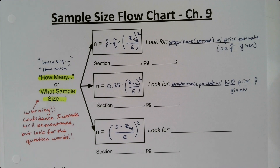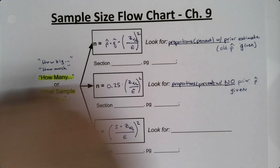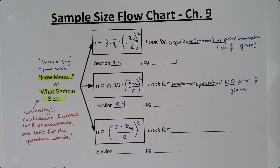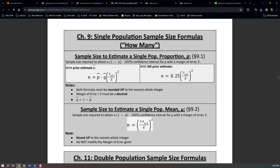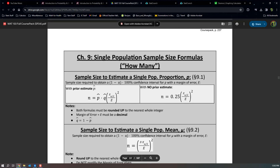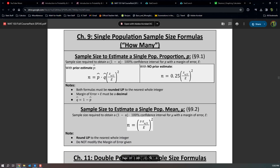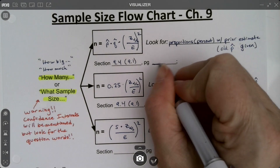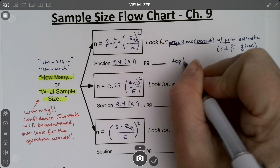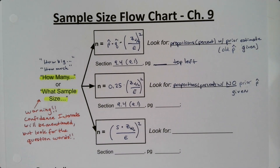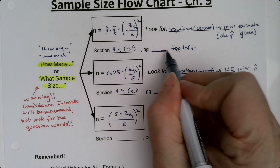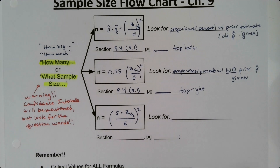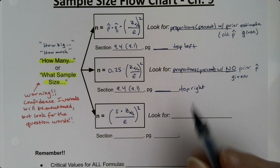Both proportion formulas are from Section 9.4 in my course, though officially they're from Section 9.1 in the textbook. You'll find them in the yellow exam notes packet. For my current semester it's page 237, but that changes from semester to semester. It's the top-left formula and the top-right formula on that page.